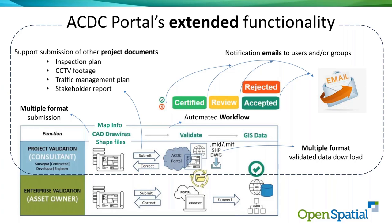When you've passed validation, you can also convert the data to shapefile, MIF file, or a drawing. If you use Attributor to capture ASPEC data, but there's an ASPEC organization that doesn't subscribe to the portal, you can submit against your own project and it will do the conversion to shapefile or MIF file that you can then submit to that council. Come and talk to us about that process — there's a link on the portal front page.